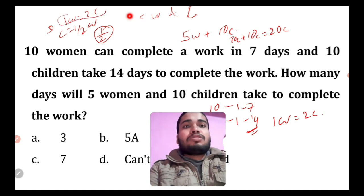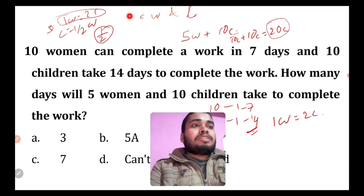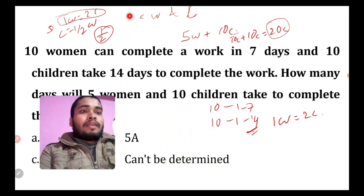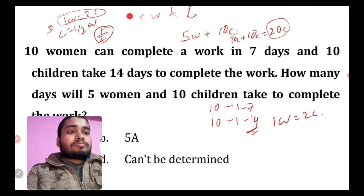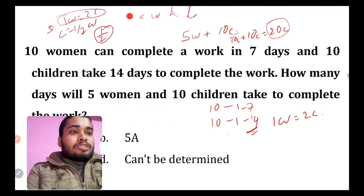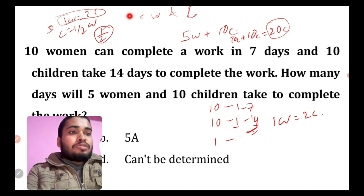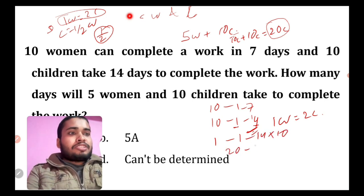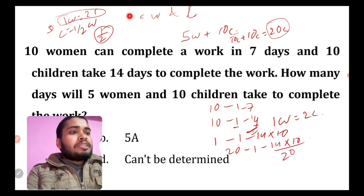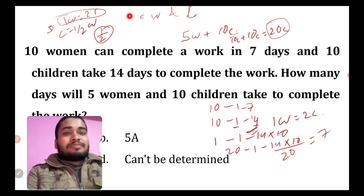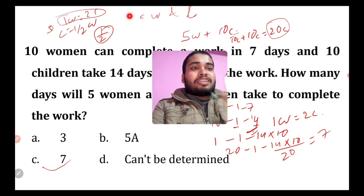We will take 1w is equal to 2c. Hence we have to find work done by 20 children. How many days will 5 women and 10 children take? 10 children will do that same work in 14 days. Therefore 1 child will do 1 work in 14 into 10 days. And therefore 20 children will do the same work in 14 into 10 by 20, that is equal to 7 days. Hence 7 days — option number C is the correct answer.